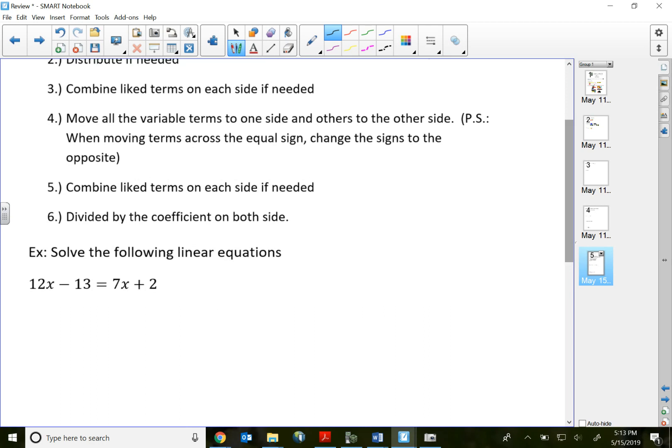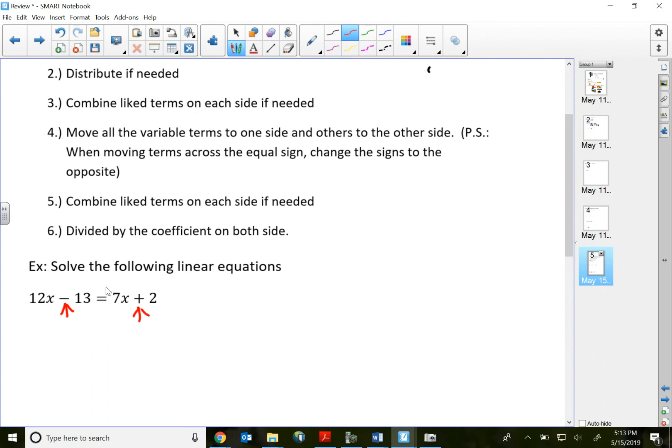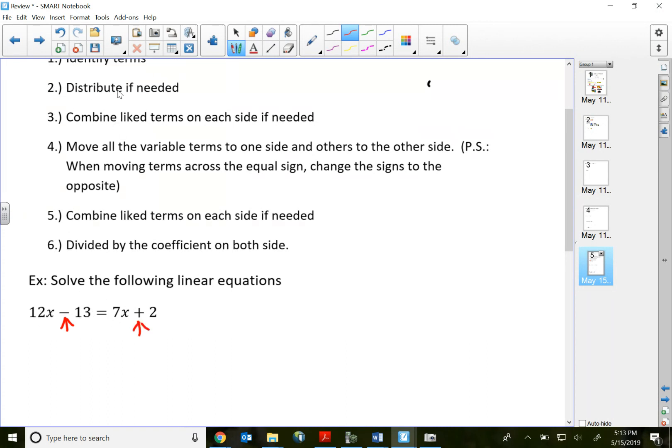So here I got 12x minus 13 equals 7x plus 2. I got four terms here in the whole entire equation. None of the four terms has parentheses, so we don't have to do any distribution. There's no like terms to combine on each side, so let's move them.